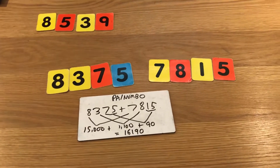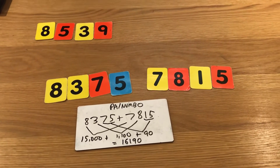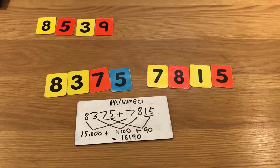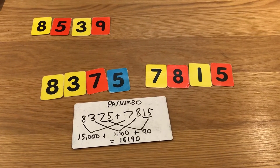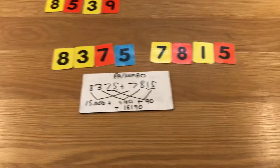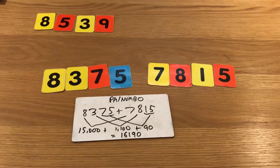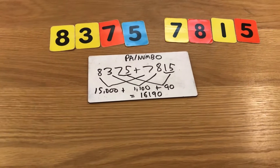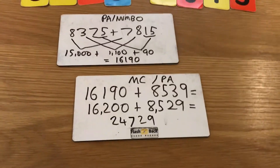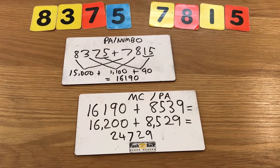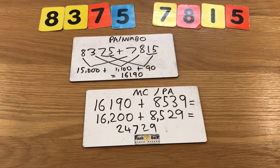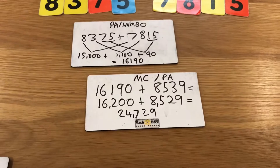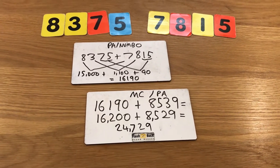Column method is quite sensible here, but I want to give year five and six children the chance to play mentally. Using simple partition: 8000 and 7000 is 15000; 800 and 300 is 1100; 75 and 15 is 90 — giving 16190. That left a complicated calculation: 16190 add 8539. I noticed 16190 is very close to 16200, so I passed 10 over: 16200 add 8529 — partition gives 24000, 200 and 500 is 700, plus 29 gives 24729.